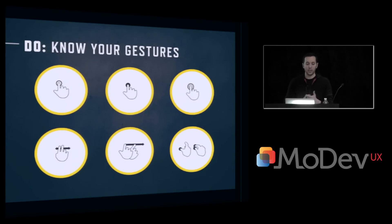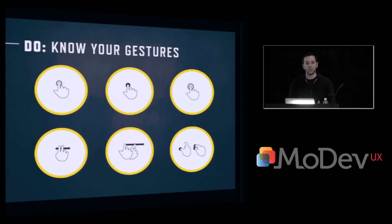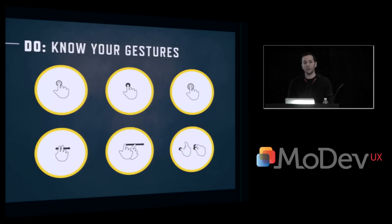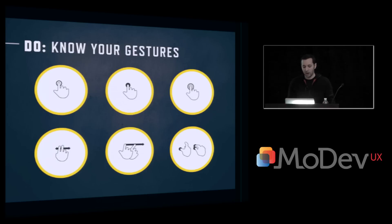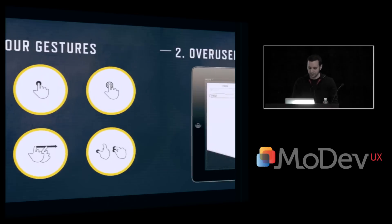Three points on gestures: first is consistency. The second is making sure that we don't conflict with iOS-level gestures — these are the multi-finger gestures like the four-finger swipe up or the five-finger swipe left or right. And finally, ensuring that if we do use non-conventional gestures, we introduce those to our users as we go through the app.